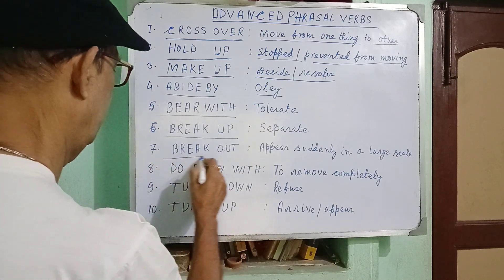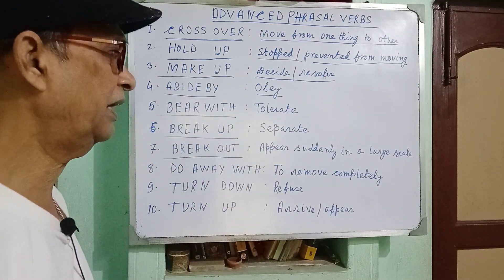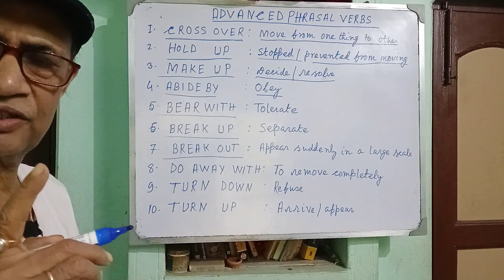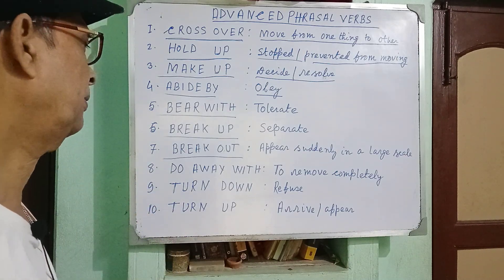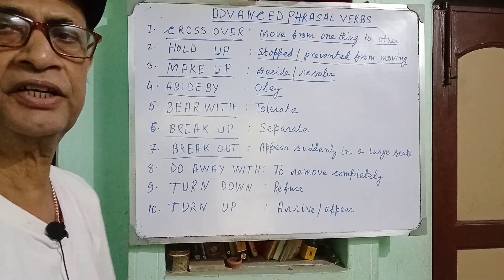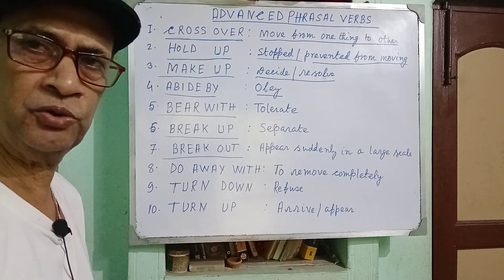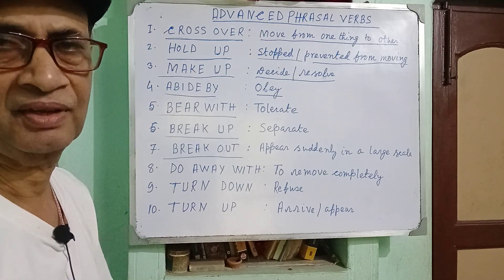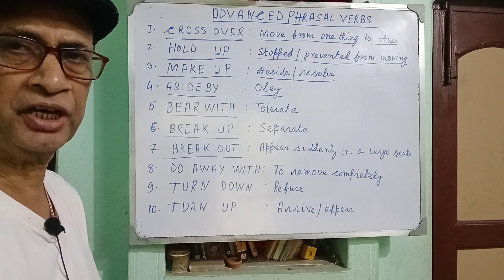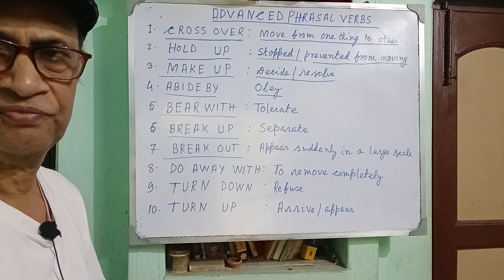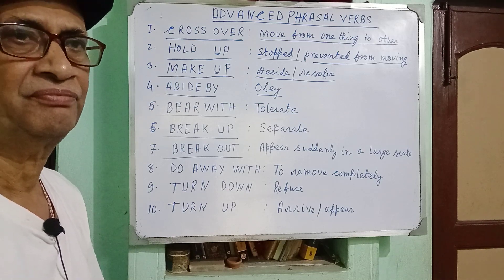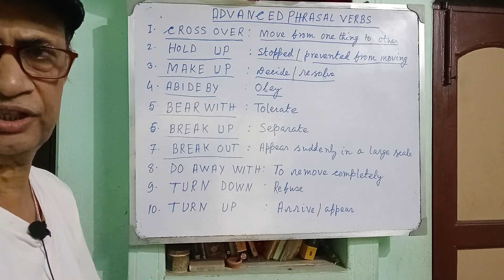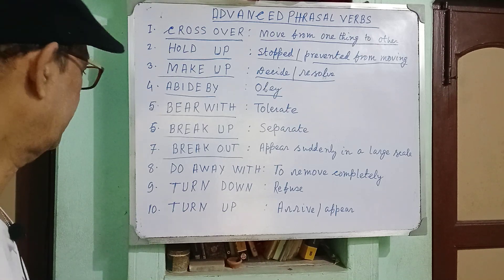'Break out' means to appear suddenly on a large scale. For example, 'Recently, dengue has broken out in our town in epidemic form' — in our city. That is 'break out.'